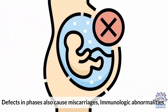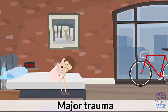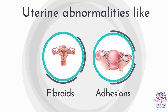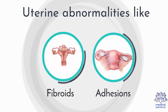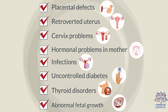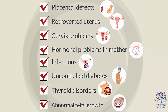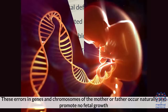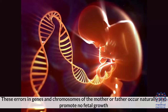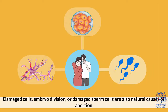Defects in placental phases also cause miscarriages. Additional causes include amniologic abnormalities, major trauma, uterine abnormalities like fibroids, adhesions, placental defects, retroverted uterus, cervix problems, hormonal problems in the mother, infections, uncontrolled diabetes, thyroid disorders, and abnormal fetal growth. Errors in genes and chromosomes of the mother or father can occur naturally and promote no fetal growth. Damaged cells, embryo division, or damaged sperm cells are also natural causes of abortion.